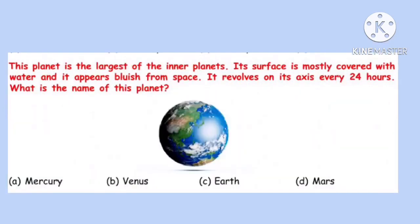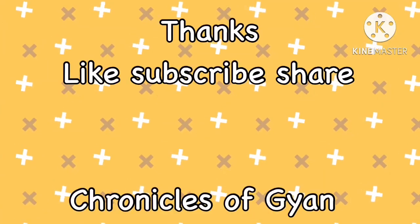Question 30. This planet is the largest of the inner planets. Its surface is mostly covered with water and it appears bluish from space. It revolves on its axis every 24 hours. What is the name of this planet? Correct option is C: Earth.